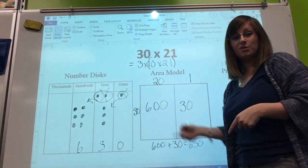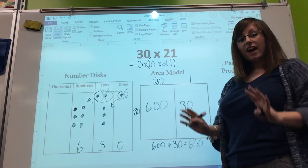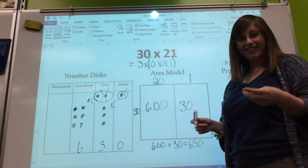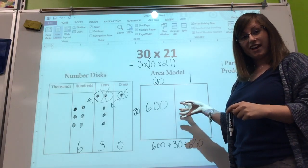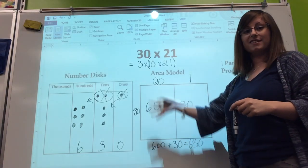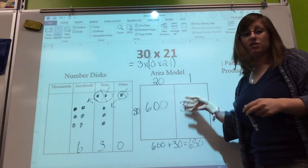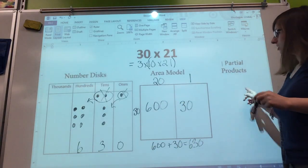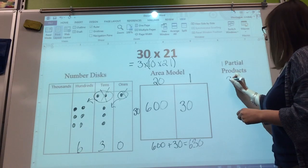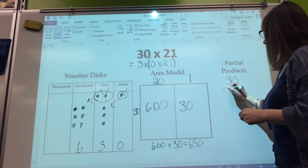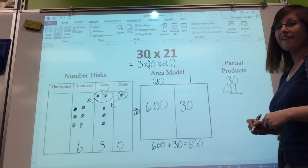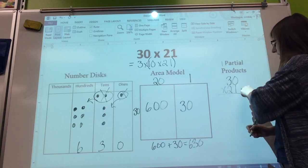Finally, if your student or child can do this in their head, if they can visualize this area model in their head, which might take them a little while, they can do the partial products. We write 30 times 21 vertically, and we think in our head: 0 times 1 is 0, 0 times 20 is 0.